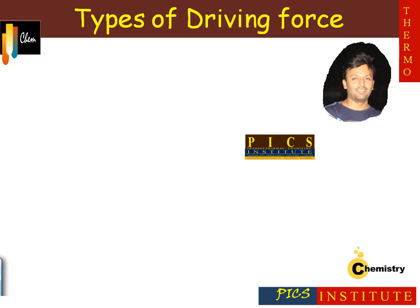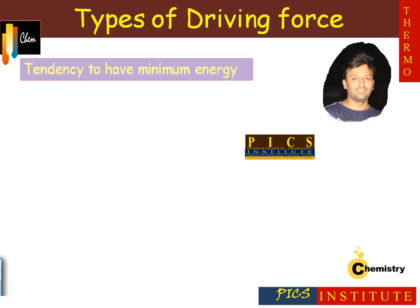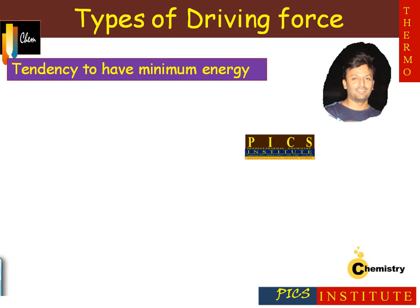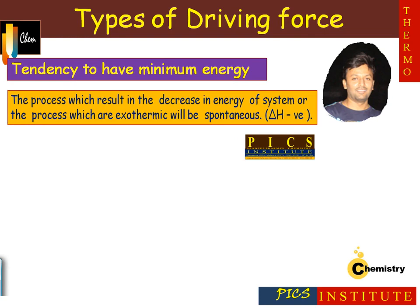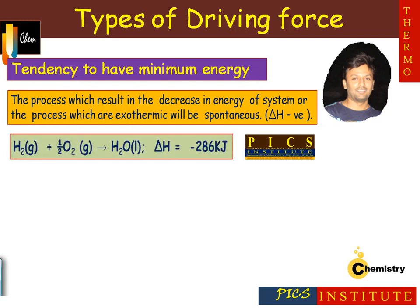Driving forces are of two types. The first driving force is the tendency to have minimum energy. According to this, any process which results in a decrease in the energy of the system — that is, processes which are exothermic — will be spontaneous. So we can say any process for which ΔH is negative will be spontaneous.